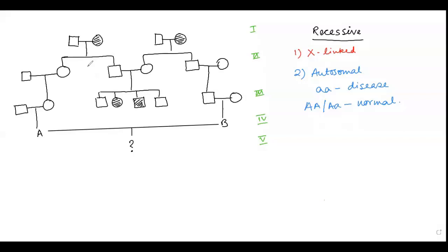Hello students, today we will be discussing pedigree analysis. In a pedigree, square boxes represent males and circles represent females. The dark-filled positions denote affected (diseased) individuals. According to the question, a pedigree is given and the only information provided is that the trait is recessive.